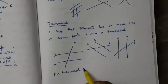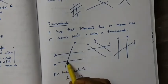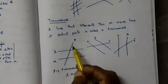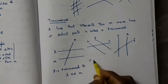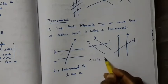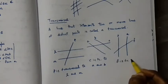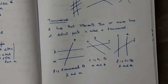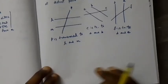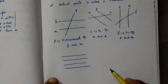P is transversal to L and M — P is a line that meets lines L and M at two different points. Similarly, C is transversal to A and B, and F is transversal to D and E.